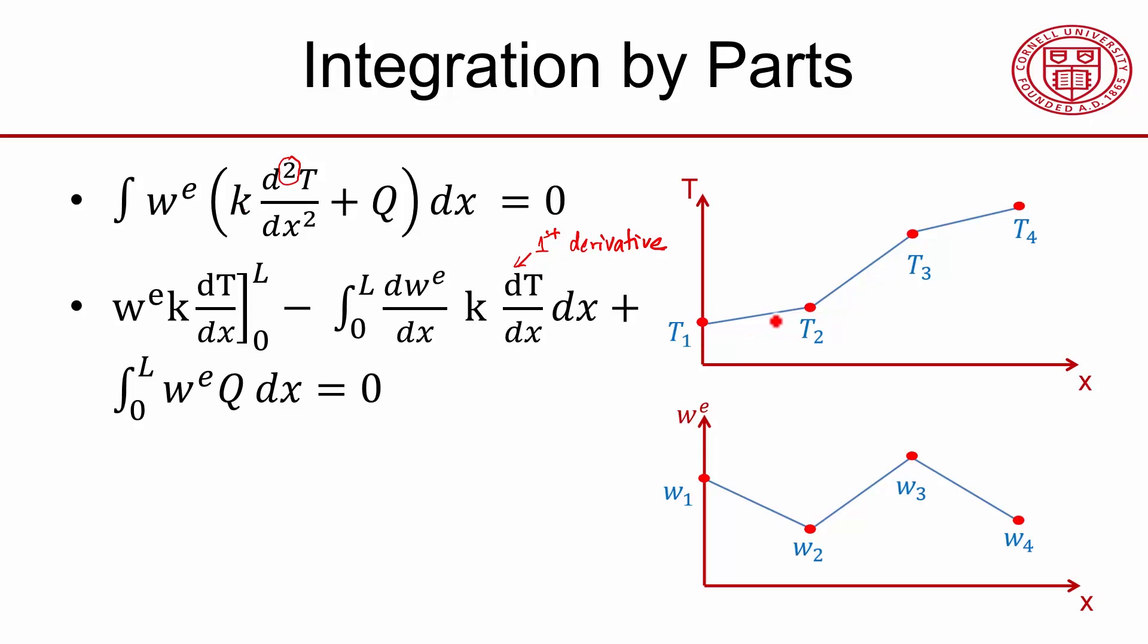So second derivative is zero everywhere, and it's not defined at the nodes. Whereas the first derivative is defined, it's discontinuous at the nodes, that's not a big problem when you're doing integration.